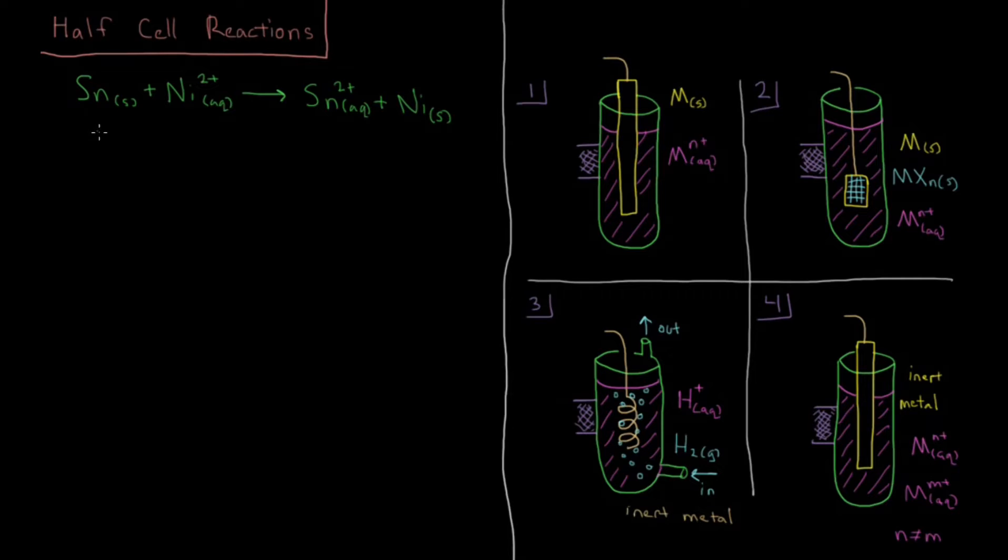Starting off with the prototypical example of an electrochemical cell from the previous video, we have tin solid reacting with aqueous nickel ions to form aqueous tin ions and nickel solid.